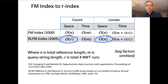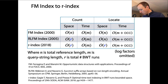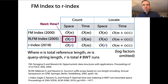The only problem was this advance was only for the count query, not for the locate query — where you want to know not just whether a string occurs, but where it occurs in the indexed collection. Then in 2018 there was another breakthrough by Travis Gagie, Gonzalo Navarro, Nicola Prezza, and others, showing how to do both the count query and the locate query in time proportional to the number of runs. These are the ideas we're going to look at in subsequent videos — starting with how to achieve big-O of R space for count queries, then how to do locate queries in big-O of R time.